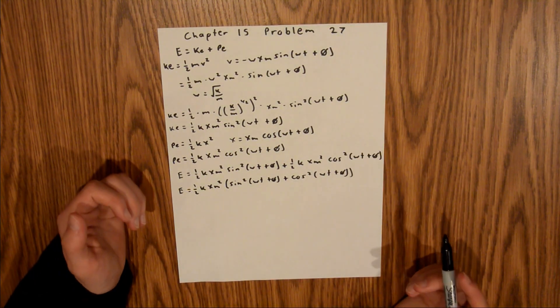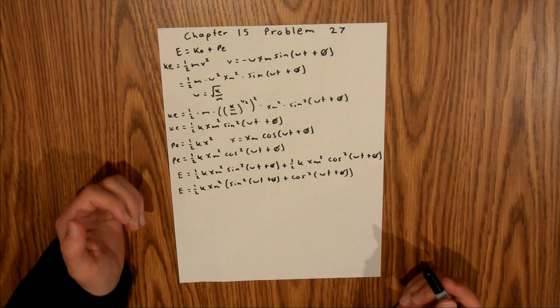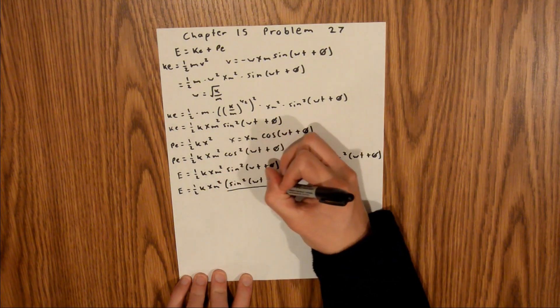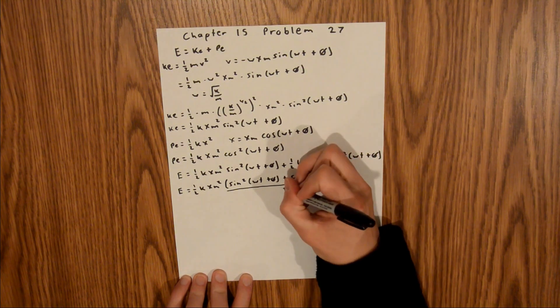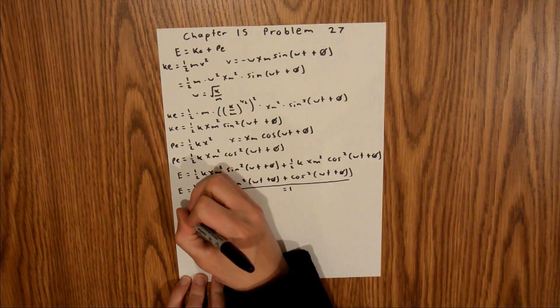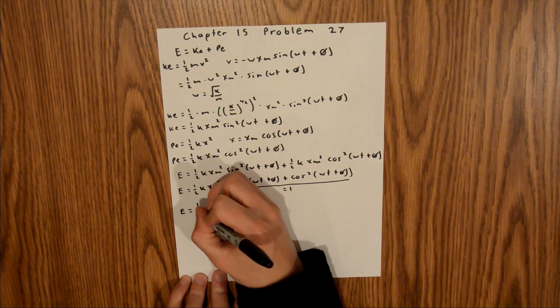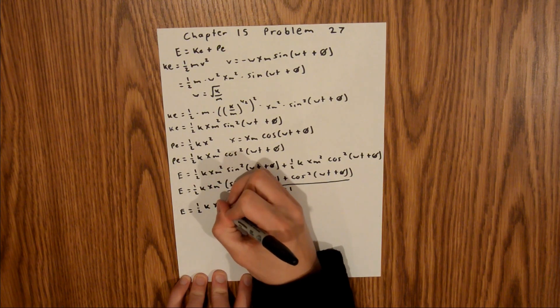And so by trig identities, we know that sine squared plus cosine squared equals 1. So this entire term right here is actually equal to 1. So E, our mechanical energy, is actually equal to 1 half kxm squared.